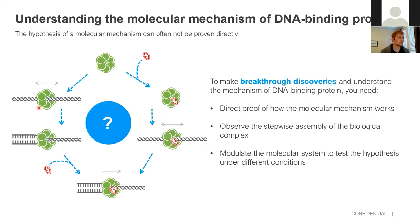Or does it bind to the DNA first, start to open it, but then requires, say, this cofactor to process? That could be the other path. And so what you would want to do is to observe the stepwise assembly of these biological complexes to figure out which pathway it takes. And finally, you might want to go back and modulate the system to test the hypothesis under different conditions or in the presence or absence of different inhibitors.